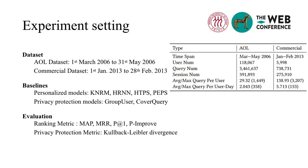The setting of our experiments are listed as follows. We evaluate our model on two non-personalized search logs: the public AOL data and a commercial dataset. We select several neural ranking models, personalized search models, and privacy-enhanced models as baselines. We use several ranking metrics to evaluate the ranking qualities, as well as KL divergence for privacy protection capability.